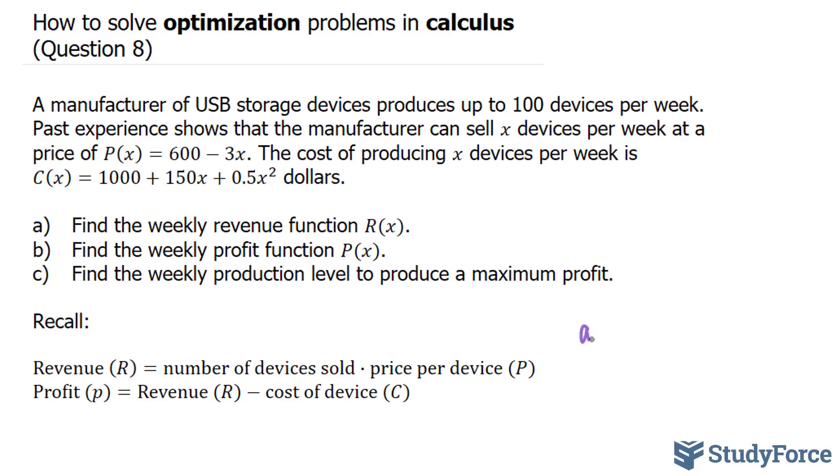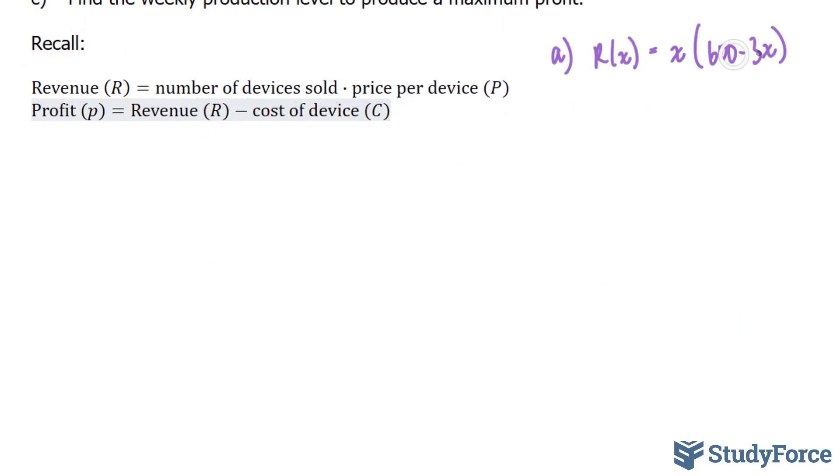So for A, revenue R(x) is equal to x times (600 - 3x). Now I'll expand the right side, where I end up with 600x minus 3x squared. Rearranging this, I end up with the following equation.